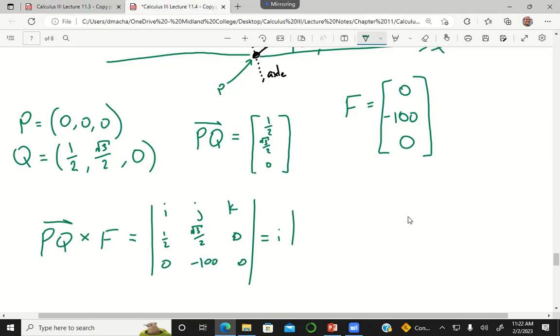This is going to be i times this determinant, minus j times this determinant, plus k times this determinant.